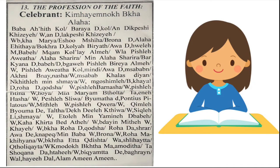كم هيمنخ بخاء لها بابا أحيث كول برايت كول عندك بيشي خزية واندلك بيشي خزية وبخاء مريا إيش عمشيحة بروند. آلها إيحي ذايا بخرة كلي برياثة آود هوي لمبابي قم كلي علمة ولبشل قويذا آلها شاريرا من آلها شاريرا برك. ياند بابي.